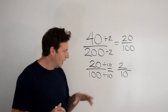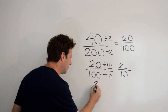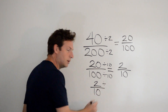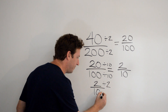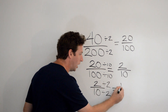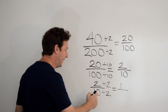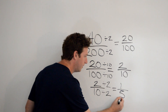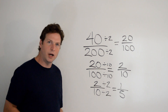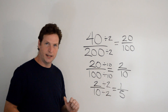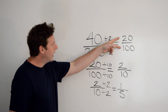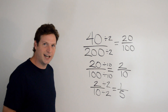We're going to divide 2 over 10 by a common factor of 2. 2 divided by 2 is 1, and 10 divided by 2 is 5. And there we have it — we've now reduced 40 over 200 to 1 fifth. We used equivalent fractions along the way, like 2 over 10 and 20 over 100. Easy enough.